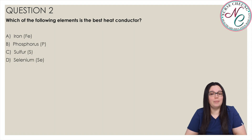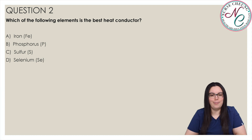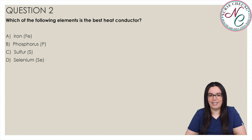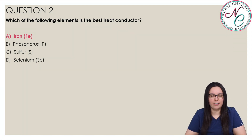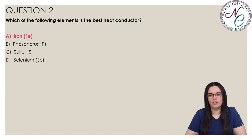Which of the following elements is the best heat conductor? Is it A Iron, B Phosphorus, C Sulfur, or D Selenium? And the correct answer is A Iron. Metals are better conductors of heat and electricity than non-metals. Iron is the only metal among all of the choices. Phosphorus, Sulfur, and Selenium are all non-metals.